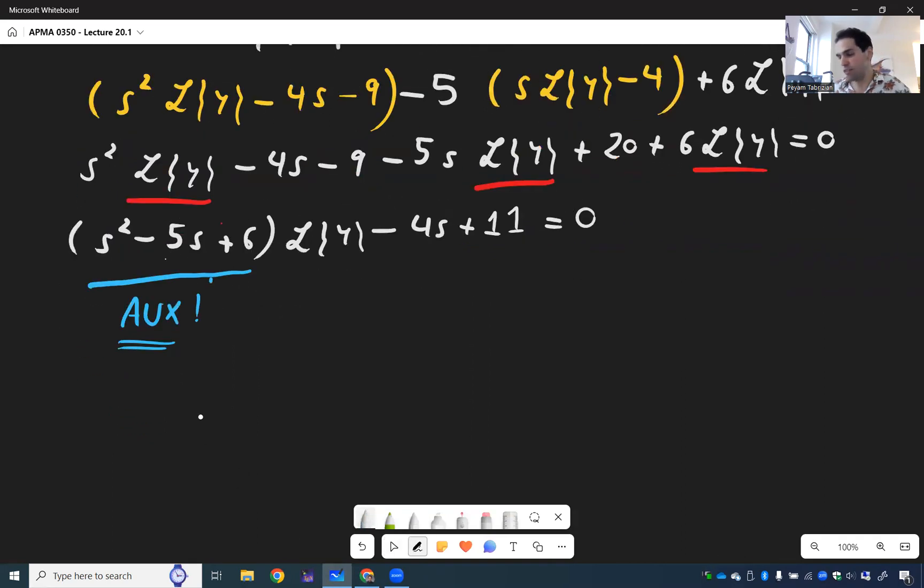And then we can solve for L of y. So I think L of y is 4S minus 11 over S squared minus 5S plus 6. And by the way, the Laplace transform just wants to tell you, I love you because I L of y. Which is probably not the way you feel. And notice what makes this so nice is that this was purely an algebra problem. There was no differentiation whatsoever, which is what makes Laplace transform so nice.